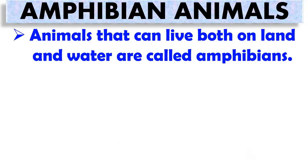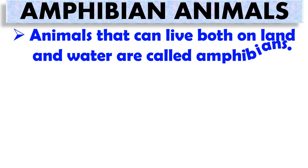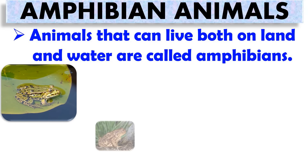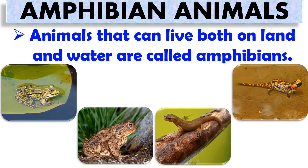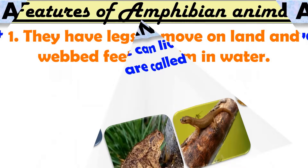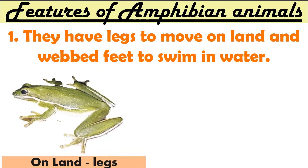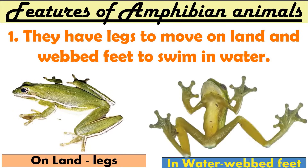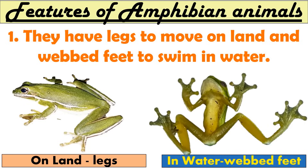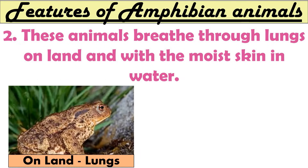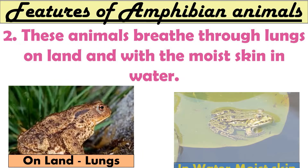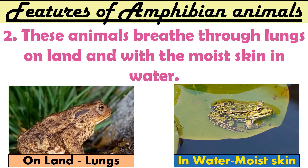Animals that live both on land and in water are called amphibians. Frogs, toads, newts, and salamanders are some examples. They have legs to move on land and webbed feet to swim in water. These animals breathe through lungs on land and through their moist skin in water.